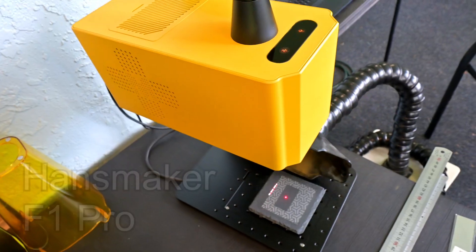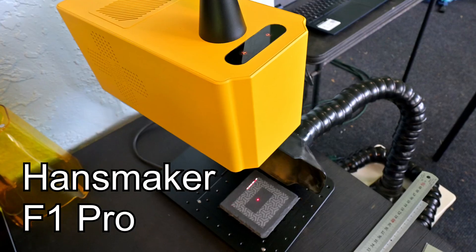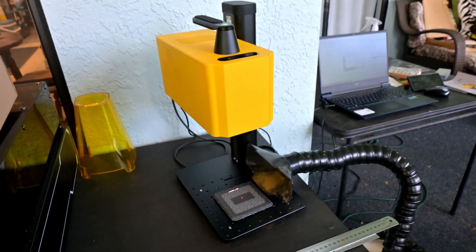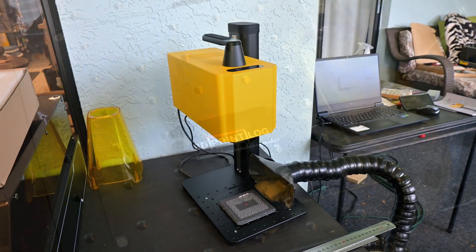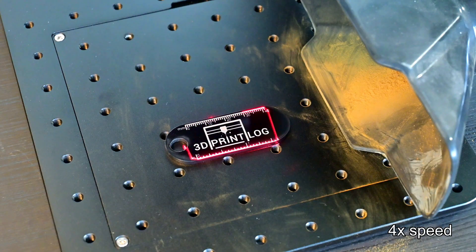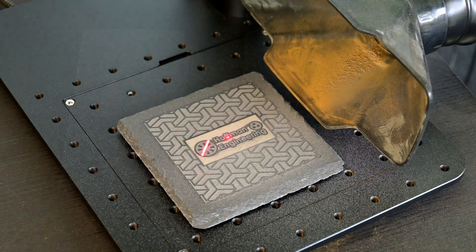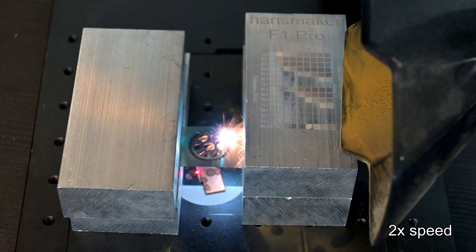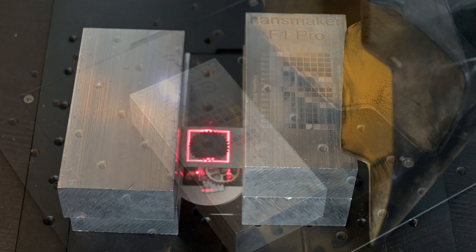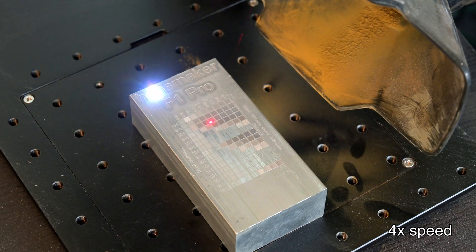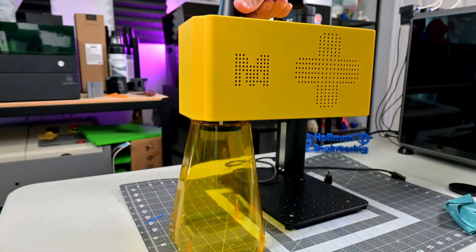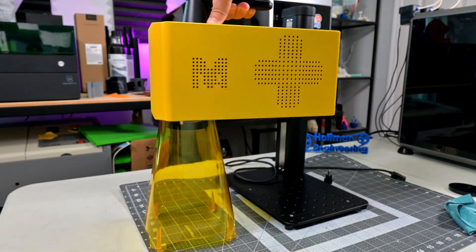Today we're taking a hands-on look at the Handsmaker F1 Pro, a 20-watt fiber laser that promises speed, precision, and versatility in a compact portable package. I've spent the last month putting it through its paces, engraving metals, plastics, stone, and even cutting steel, and I've discovered some impressive strengths and a few quirks that you'll definitely want to know about before buying. Stick around because by the end of this review, you'll know exactly whether the F1 Pro should be your next laser.